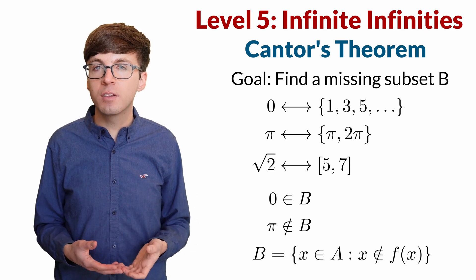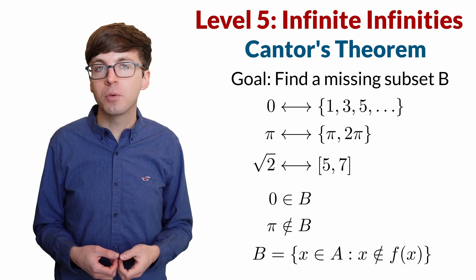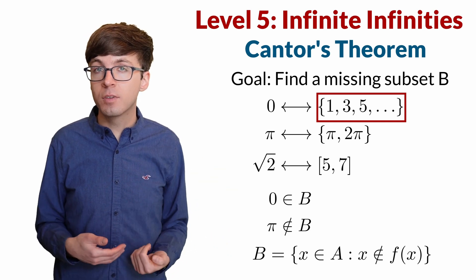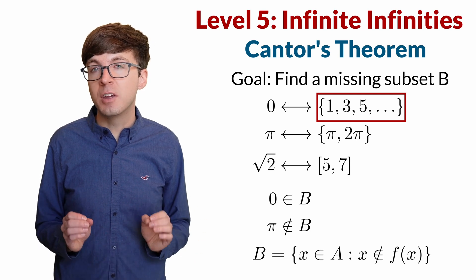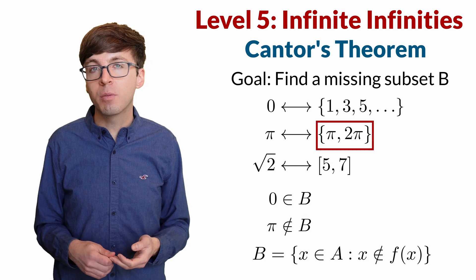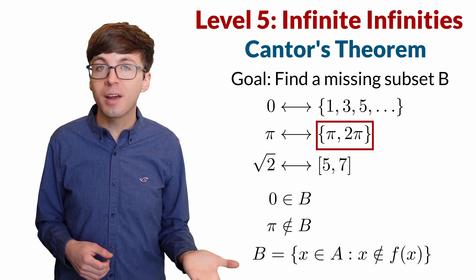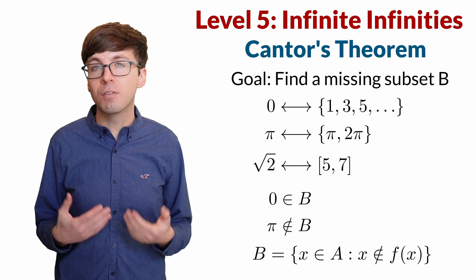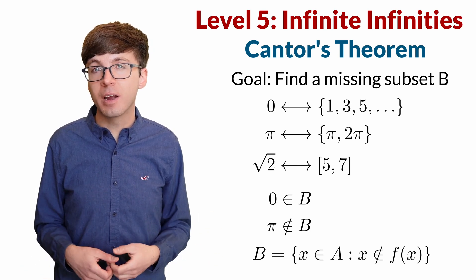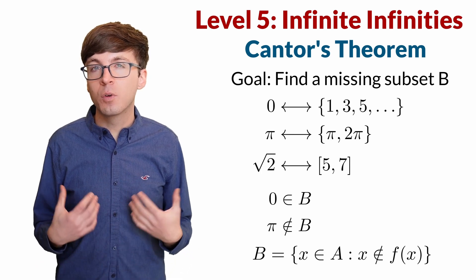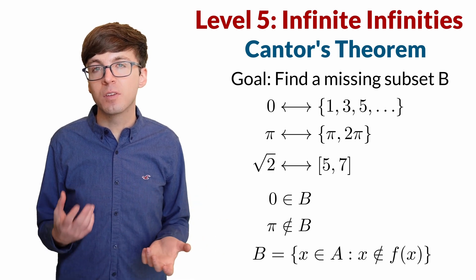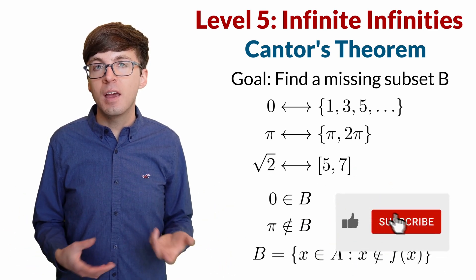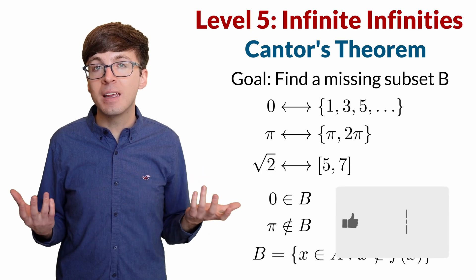We're constructing a set B made up of all elements x in A where x is not in f(x). Our subset can't be the one paired with zero, because the one paired with zero does not contain zero but ours does. And our subset can't be the one paired with pi, because the one paired with pi contains pi but ours doesn't. By being contrary, we've ensured our subset can't equal any subset used in the bijection. So f is not really a bijection, and this is a contradiction. There was no possible way to pair off the elements of A with the subsets of the power set, meaning the power set has a strictly greater cardinality than A. From this, we can find infinitely many cardinalities of infinity.